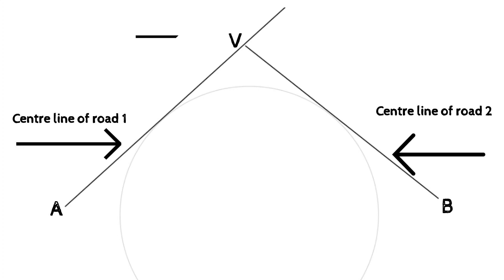Now we will consider the scenario. AV is center line of road number one, BV is center line of road two. Two roads are intersecting at a point V.